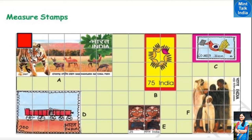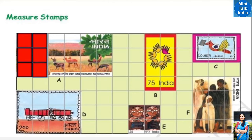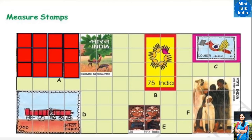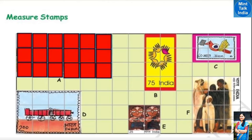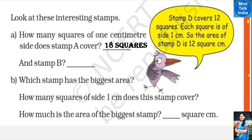Let's count the squares covered by stamp A — this is the red square of 1 cm side. Counting all the squares: 1, 2, 3, 4, 5, 6, 7, 8, 9, 10, 11, 12, 13, 14, 15, 16, 17, 18. That means stamp A covers a total of 18 squares.